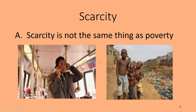Poverty might also depend on what time period you're living in. Someone considered middle class 50 years ago might be considered poor today, and what's considered poor now might not have been considered poor 50 or 100 years ago. However, scarcity exists both now as it did in the past in the same kind of way. So scarcity is more an objective term, whereas poverty is more subjective.